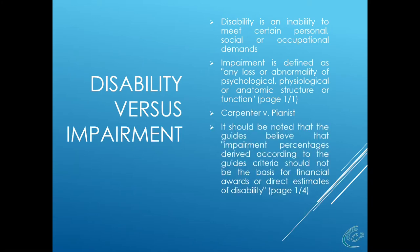It should be noted — and I love saying this from page four of the guides — that impairment percentages derived according to the guides should not be the basis for financial awards or direct estimates of disability. This is, of course, exactly what we do when using impairment ratings to establish how many additional checks you get, either in an impairment income benefit or a supplemental income benefit situation.